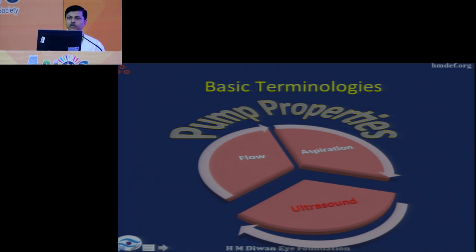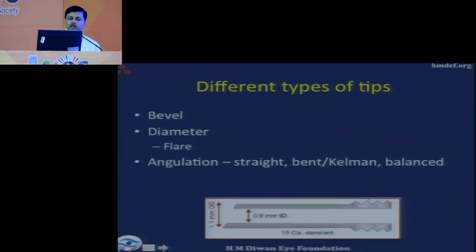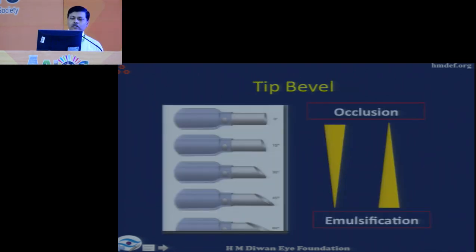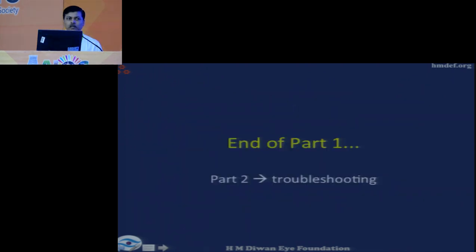Without going into detail on ultrasound, there are different types of tips. Two important parameters are the bevel and the diameter and angulation of the tip. The flatter the tip and the less the angulation, the better the occlusion but the less the efficiency. The broader and more slanted the tip, the less the occlusion but the more the emulsifying power. A balance is needed, and a 30-degree tip usually performs best.